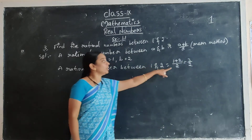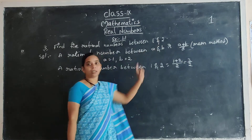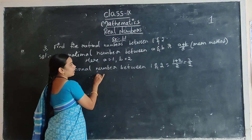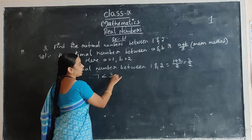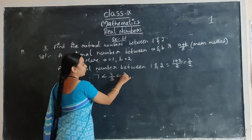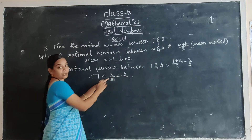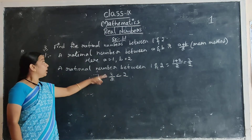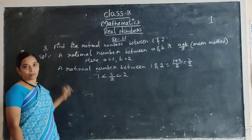Now 3 by 2 is a rational number between 1 and 2, expressed as: 1 less than 3 by 2 less than 2. That means in between 1 and 2, one rational number — you already got it. Now we want to find 4 more.